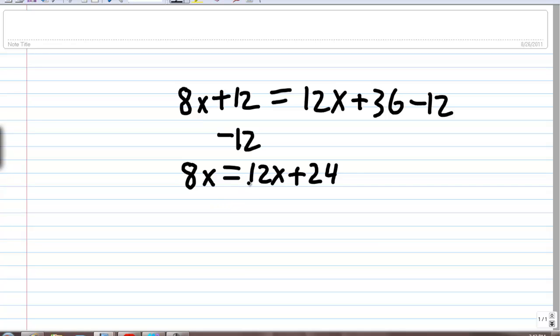Now we want to get this 12x onto the left side with our 8x. Same as we've done before, we're going to subtract 12x, and then subtract 12x over here. Which actually gives us 8 minus 12 is going to give us negative 4x is equal to 24.